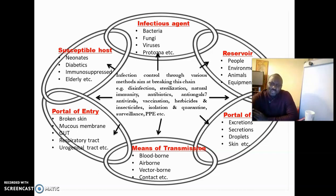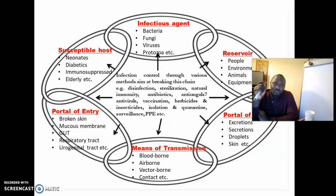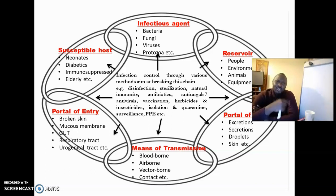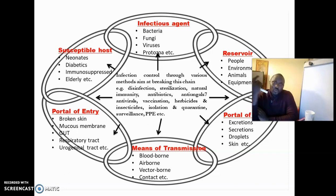The means of transmission is what we already looked at. We asked: is the pathogen airborne or bloodborne? Will blood transfusion transmit it? Will a vector play an important role — will you be bitten by a mosquito or a sandfly? We tackled biological and mechanical vectors, which are linked to the current lecture. You also need to ask whether the mode of transmission involves direct contact with the pathogen.